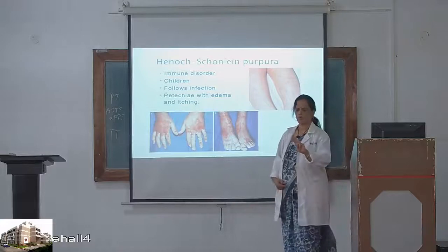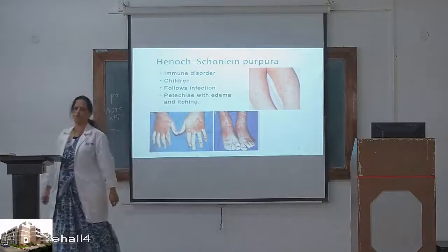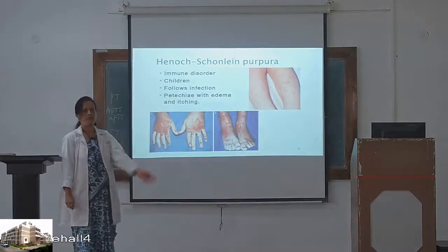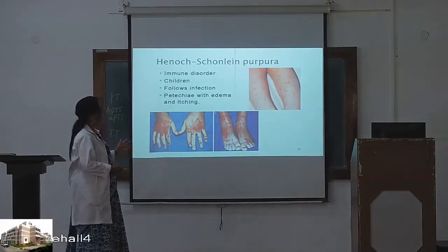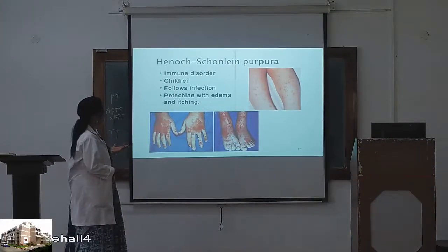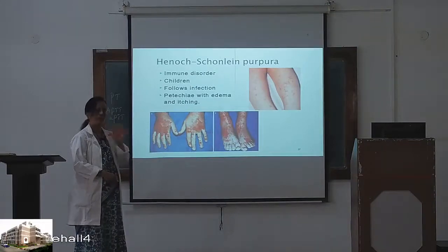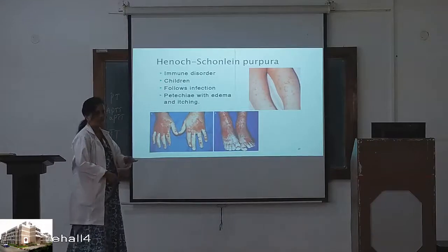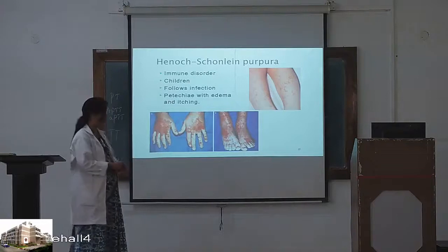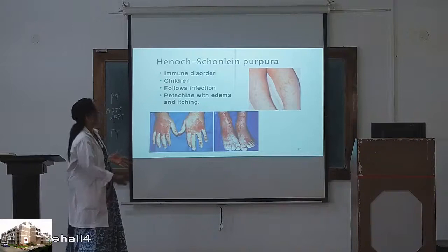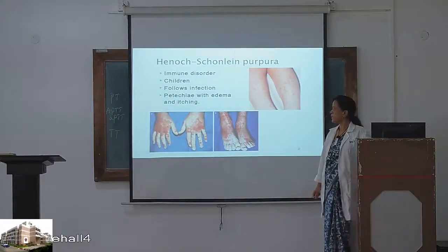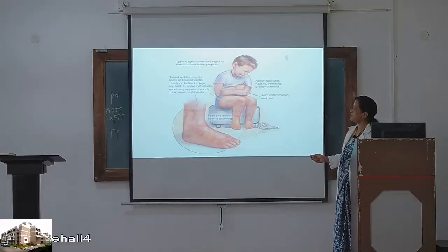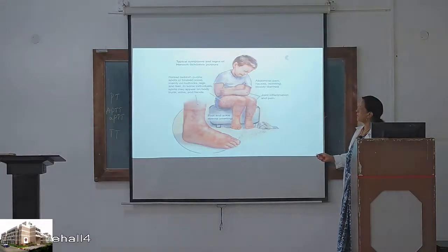Two important diseases to discuss: hemophilia and von Willebrand disease, because hemophilia is a very commonly asked short note topic. Before that, Henoch-Schönlein purpura is an immune disorder seen in children that usually follows viral infection, presenting with petechiae, edema, and itching. A child with viral infection is brought to hospital with reddish spots on the body and swelling of the limbs — that is Henoch-Schönlein purpura.